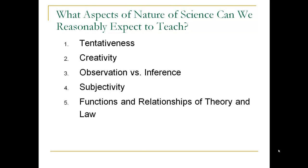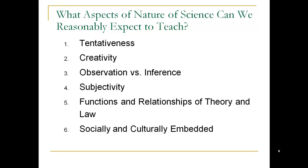The functions and relationships of theory and law: for example, a theory is an explanation, whereas a law is a description — a theory can never become a law, and a law can never become a theory. Science is also socially and culturally embedded, meaning science is influenced by society and society is influenced by science — a two-way interaction. And finally, scientific knowledge is empirically based, grounded in our five senses or extensions of our senses, like a telescope or microscope.